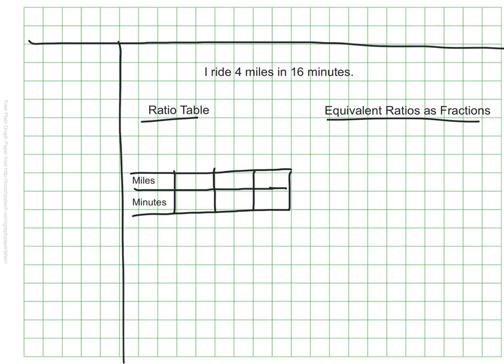In a table, I could record that I can go 4 miles in 16 minutes, and every time I go 4 more miles I add 16 more minutes. So if I go 4 more miles, I would add 16 more minutes for a total of 32, and if I go 4 more miles it would take 16 more minutes or 48 minutes. So I could use a table to figure out that if I ride 4 miles in 16 minutes, I could also ride 12 miles in 48 minutes.